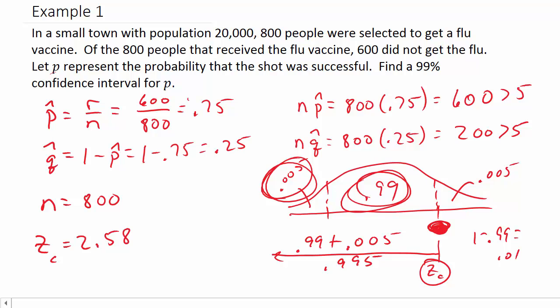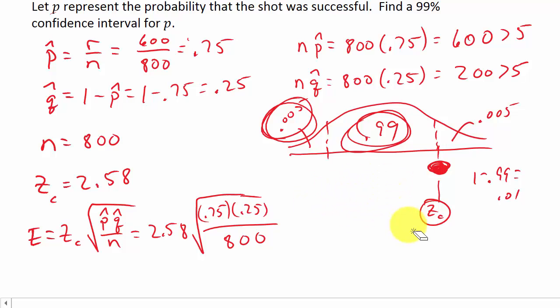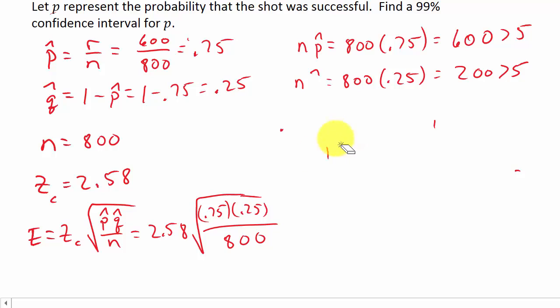Now we need to calculate E. So E is equal to Z sub C times the square root of P hat times Q hat over N. So that would be 2.58 times the square root of 0.75 times 0.25 over N. And in this case, N was 800. Let me get this out of the way, and that would be 0.0395.